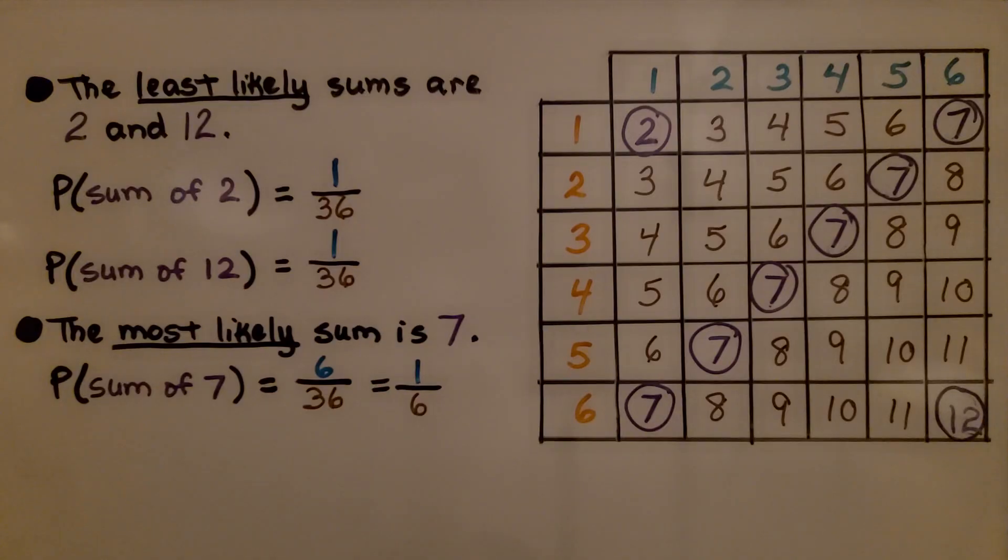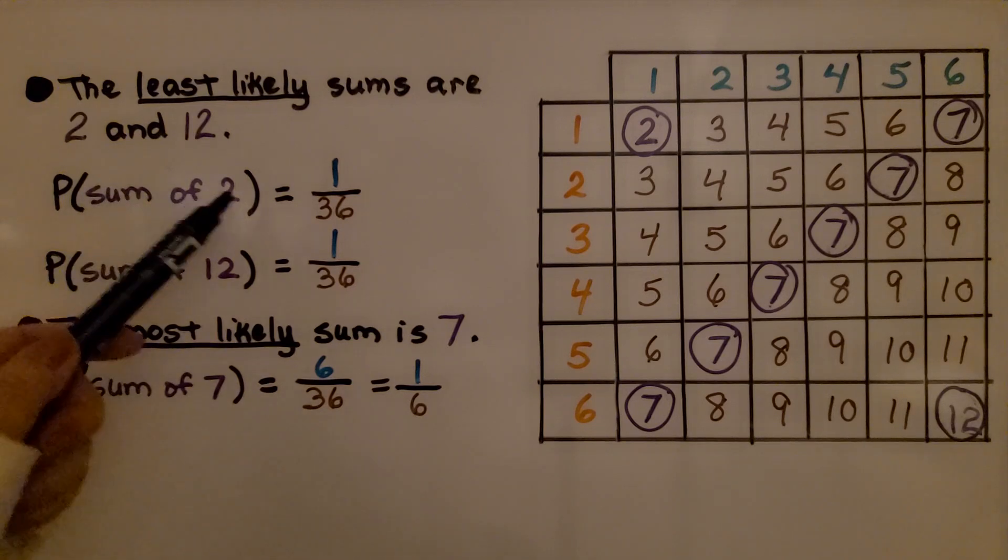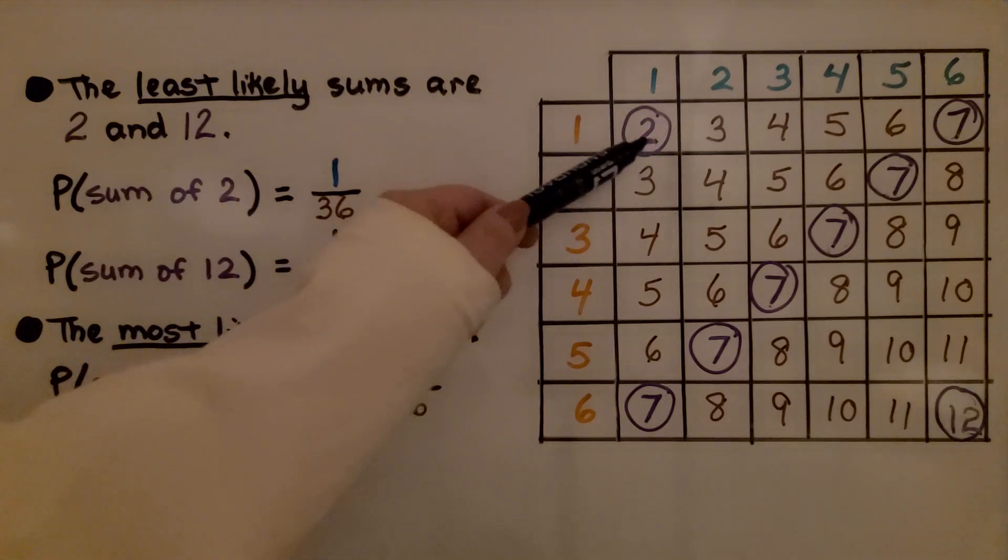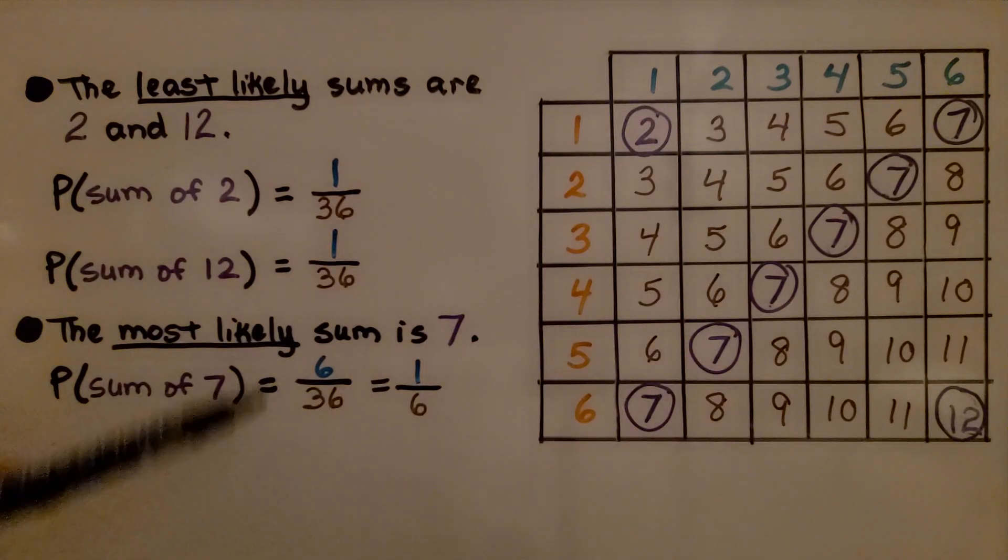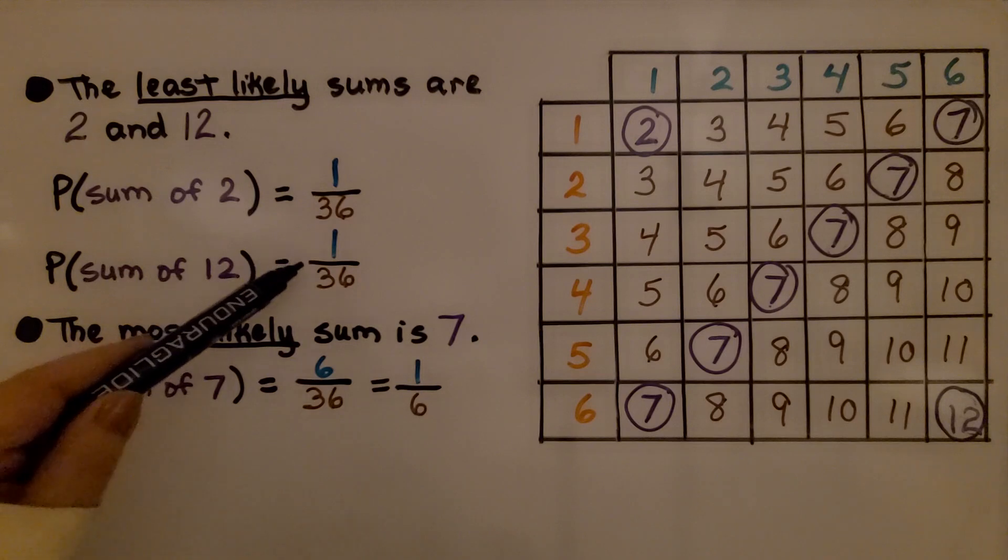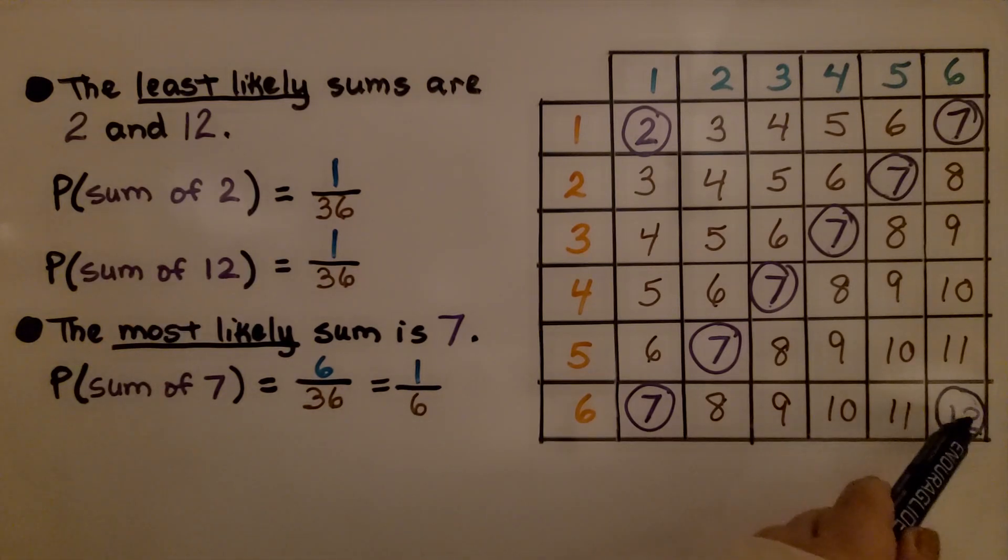The least likely sums are 2 and 12. The probability of the event being the sum of 2, there's only 1 here out of all 36 cells, it's 1/36. And the probability of the sum of 12 is 1/36. There's only 1 cell out of all 36 cells.